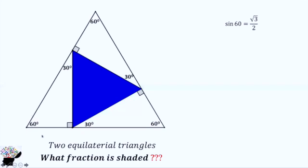From here, we know this line would be √3 because it's the opposite, and the hypotenuse is this line, so it would be 2. So you have √3 here and 2 here.